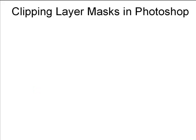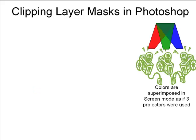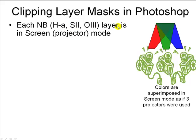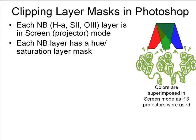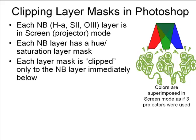We're going to do this using the clipping layer mask method in Photoshop, where HA, S2, or O3 is changed into the screen blending mode. The screen blending mode acts like three independent projectors — one projecting blue, one projecting green, one projecting red — to get a color composite. Each one has a hue saturation layer mask clipped only to the narrowband layer immediately below it, so if you change the hue or the intensity, you're only affecting that particular dataset, like the HA data or the S2 data.